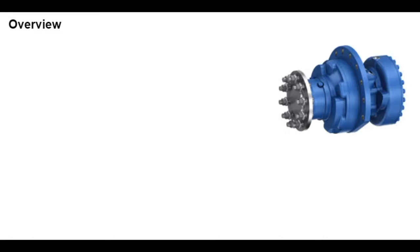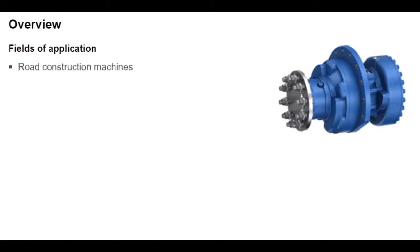These hydraulic motors can be used directly in the wheel hub as a travel drive, as seen in road construction machines, forklifts, elevating work platforms, skid steer loaders, and as drum drives for concrete mixers.